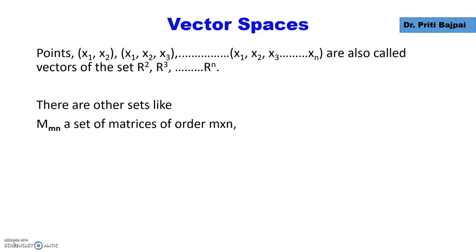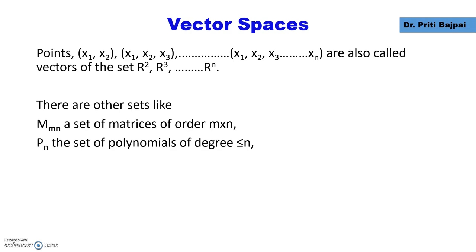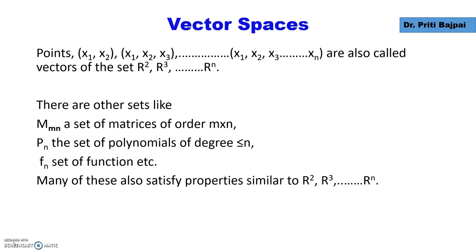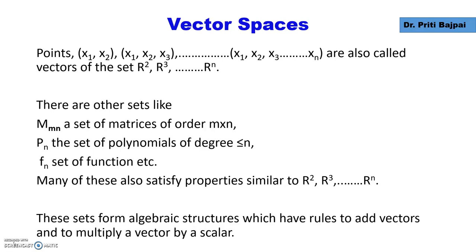So now are these the only sets? No. There are many other sets. For example, the set of matrices of order m by n, represented by Mmn. The set of polynomials of degree less than or equal to n, represented by Pn. And the set of functions is denoted by Fn. Many of these sets satisfy properties very similar to the vectors in R², R³, and Rⁿ.